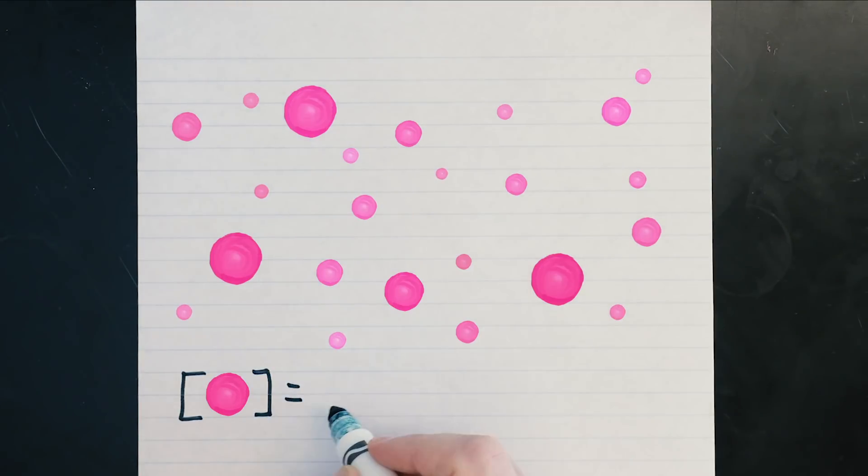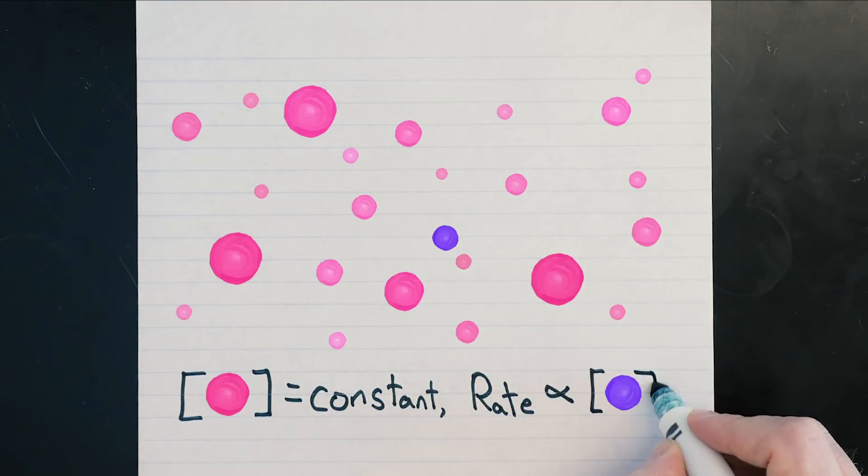If two molecules have to collide in order to react, then the rate of their reaction will increase with the concentrations of each of them. However, if we make the concentration of one so large relative to the other that it effectively never changes, then the rate is really just proportional to the concentration of the minor component.